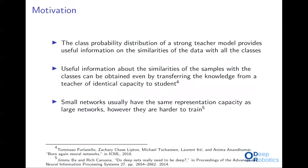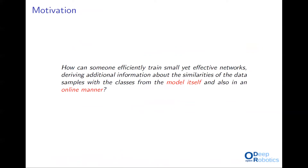This work was motivated by the following observations. First, the basic intuition behind knowledge distillation is that the class probability distribution of a strong teacher provides useful information on the similarities of the data with all the classes. Furthermore, useful information about the similarities of the samples with the classes can be obtained even by transferring the knowledge from a teacher of identical capacity to the student. Finally, small networks usually have the same representation capacity as large networks, however they are harder to train. Thus, the question that arises is how can someone efficiently train small yet effective networks by deriving additional information about the similarities of the samples with the classes from the model itself, and also in an online manner.